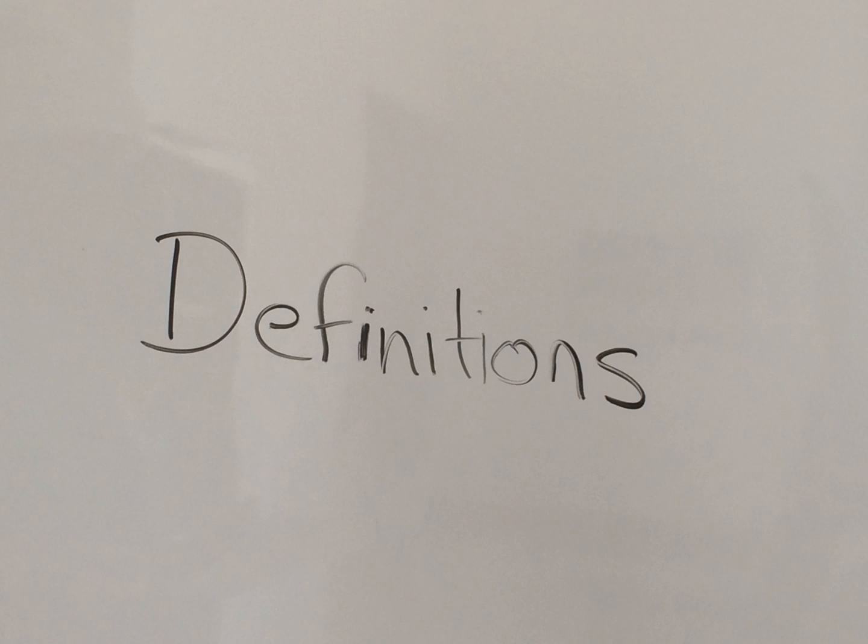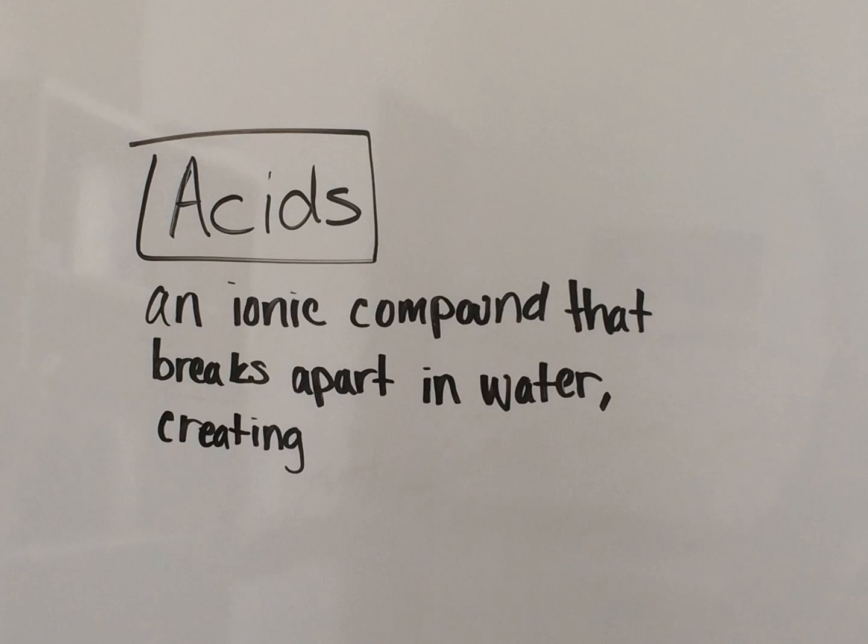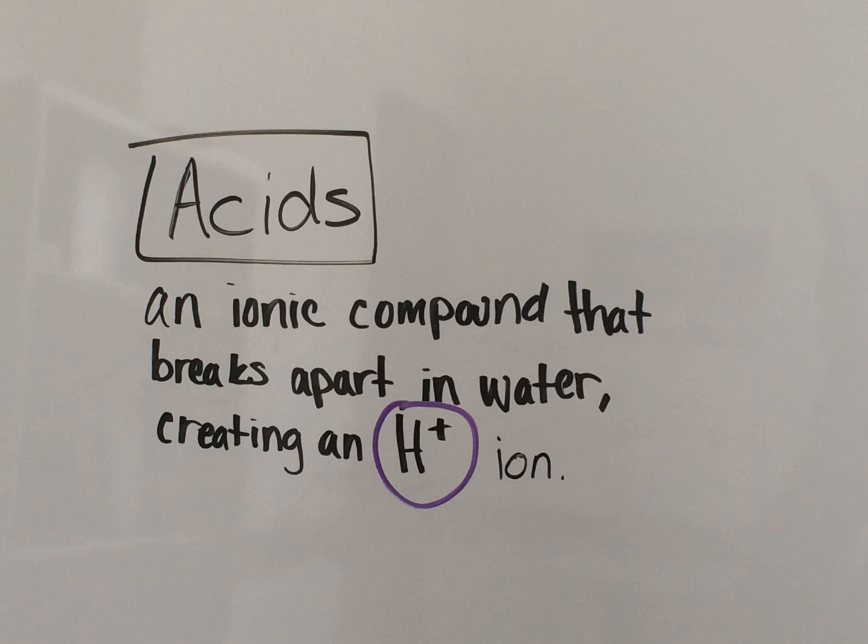So first we will explain the definitions of acids and bases. The definition of an acid is an ionic compound that breaks apart in water, creating a hydrogen ion.